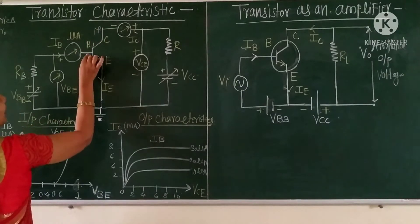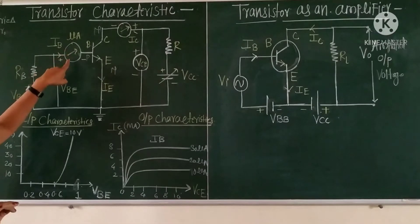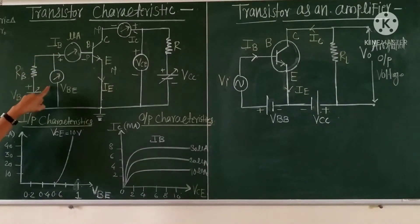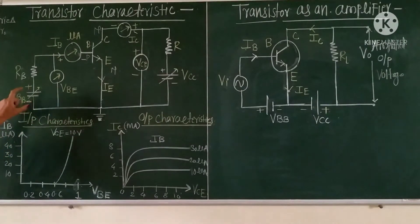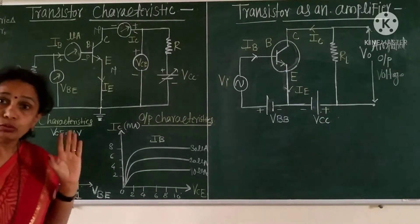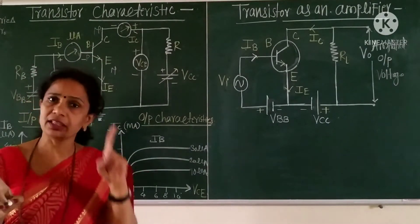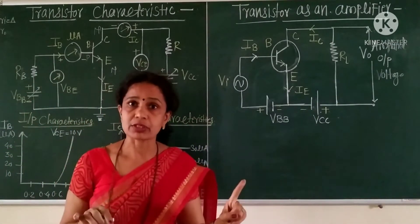This is the NPN transistor. Here the microammeter is connected to the base which measures the current IB, means current flowing to the base. The VBE, voltage between the base and emitter, is measured by the voltmeter, which is called VBE. Due to VBB, the base emitter junction is forward biased. In a transistor, one junction is always forward biased and another junction is reverse biased.